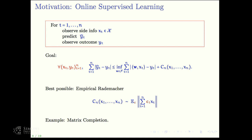One example to have in mind is matrix completion. This is a case where both W and X are matrices. One by one, you're predicting entries of a matrix. X_T is just an indicator — a zero matrix with an indicator where you need to make the next prediction. That's the side information. You make the next prediction Ŷ_T, observe the outcome, and at the end you're hoping there will be a low-rank or low trace-norm explanation of the observed outcomes.